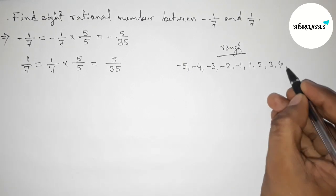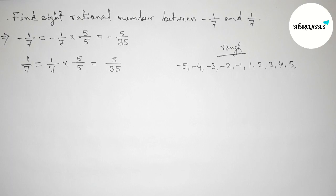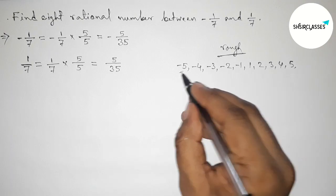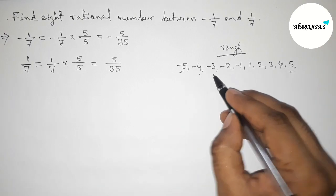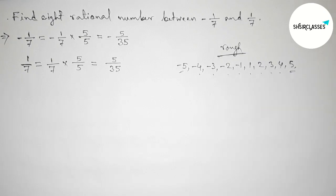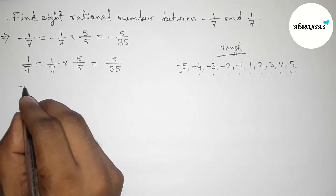and by these 8 integers we can form 8 rational numbers. Okay, so we can get 8 integers. Now first